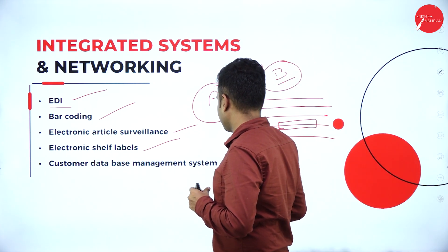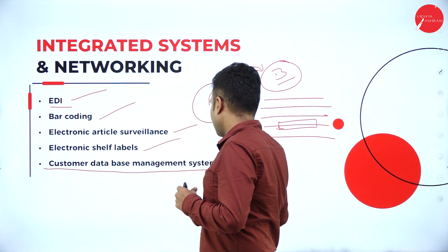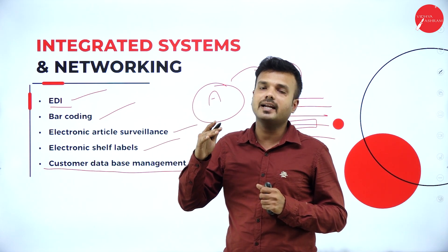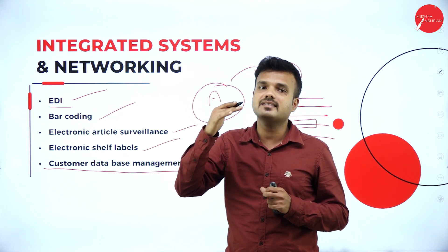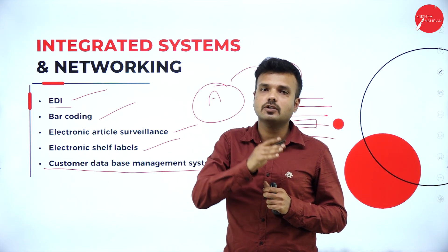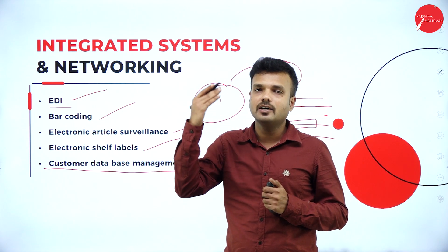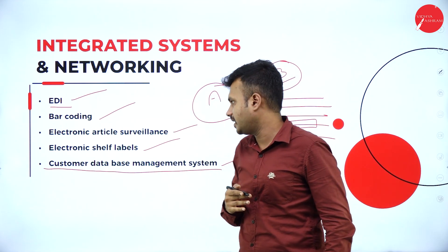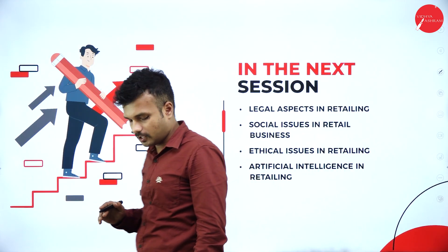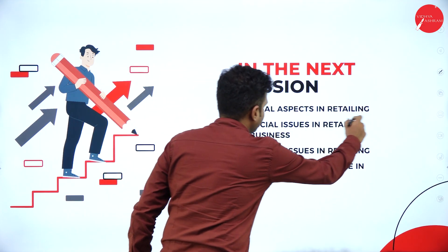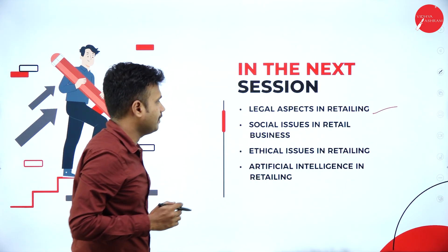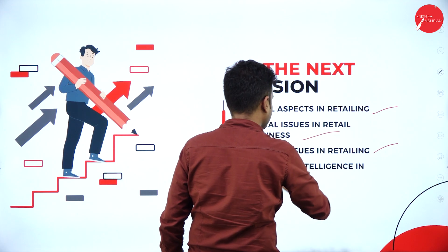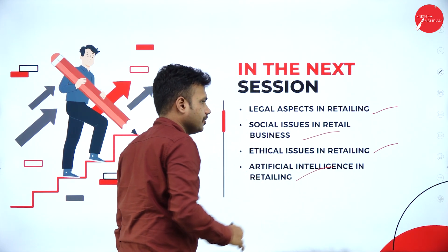Customer Database Management System, also known as CDMS, collects all relevant information regarding the purchase and sales of the product, and also collects information about the wants, needs, likes, and dislikes of customers. Based on historical data, the retailer can decide future products — what kind of products to bring in. The next session will cover legal aspects in retailing, legal laws that must be followed by the retailer, social issues, ethical issues, and artificial intelligence in retail business. Thank you.